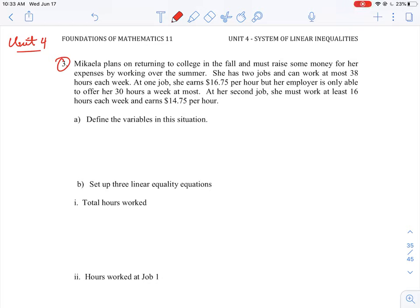Okay, so let's take a look at this question number three in unit four. It's another optimization problem. Here we have a student who is looking to return to school in the fall but currently has two jobs. If we look through all the information here, we have to define the two variables. So we've got two jobs here.